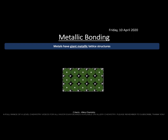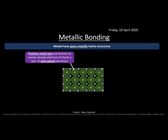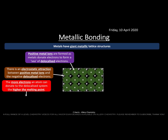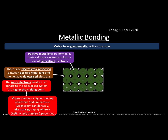Metallic bonding occurs between metals. Metals have a giant metallic lattice structure. A metallic bond exists where positive metal ions are surrounded by a sea of delocalized electrons — each metal atom gives up electrons that are delocalized across the whole structure. The bond is the attraction between the positive metal ions and the delocalized electrons. The more electrons an atom donates to the delocalized system, the higher the melting point — magnesium donates two electrons per atom, sodium donates one, so magnesium has a higher melting point.